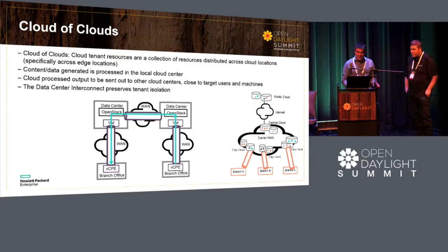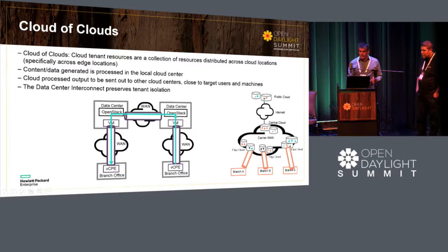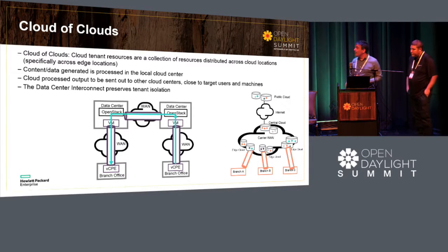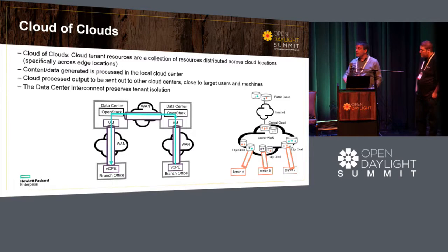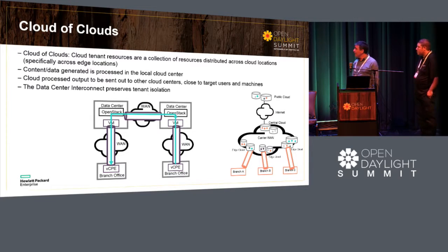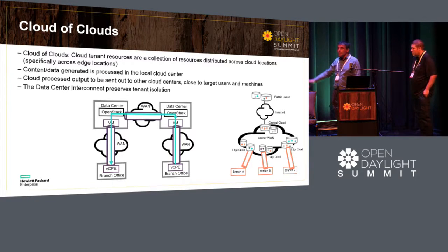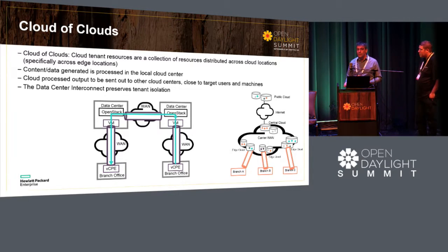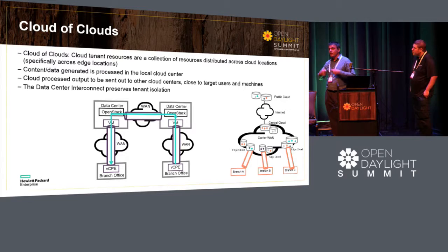In the cloud-of-clouds model, traffic runs from the branch office connected to the data center, between data centers via OpenStack, through to the other side. You can have multiple branches, each with its own edge computing. As we move to mobile edge computing and augmented reality, these are bandwidth-consuming applications that need local compute resources.